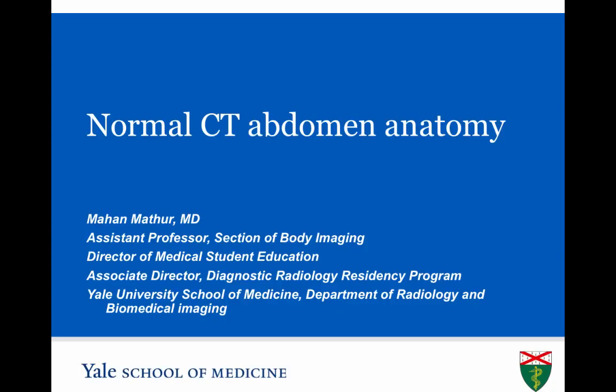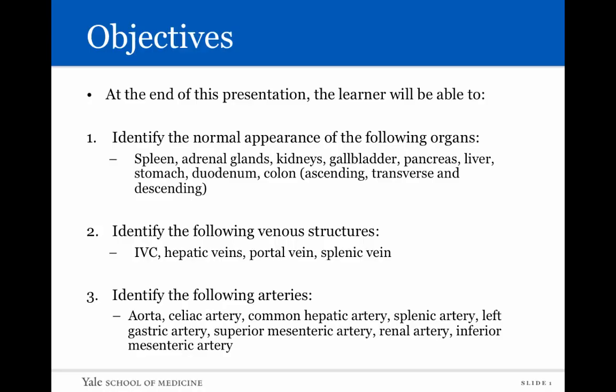The following video will cover normal CT abdominal anatomy. We have a couple of objectives. At the end of this presentation, the learner will be able to identify the normal appearance of a variety of organs within the abdominal cavity, specifically the spleen, adrenal glands, kidneys, gallbladder, pancreas, liver, stomach, duodenum, and portions of the colon.